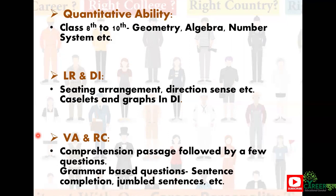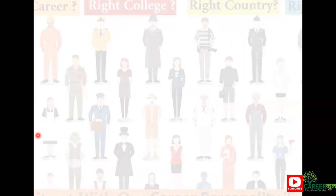In verbal ability and reading comprehension, you'll be given a comprehension passage followed by some questions. Some questions are fill-in-the-blank types, and some questions are given with four options where you have to choose the best suited option. There will also be grammar questions like sentence completions, jumbled sentences, etc.